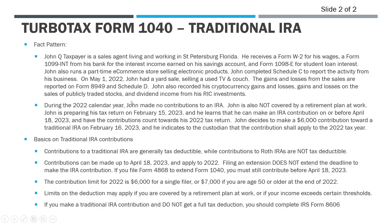The next item is the traditional IRA contribution. During 2022, John didn't make any contributions to the IRA—he didn't put any money in during the year. He's also not covered by a retirement plan at work, which is relevant because with traditional IRAs, basically anybody can open one, but the amount you can deduct is going to be limited based on your income if you have a retirement plan at work. If you're not covered by one, there are no limitations, but if you are, you might have some deductibility limits.